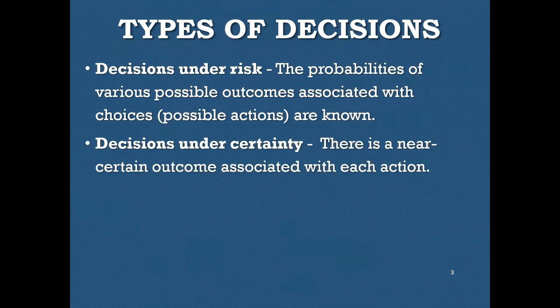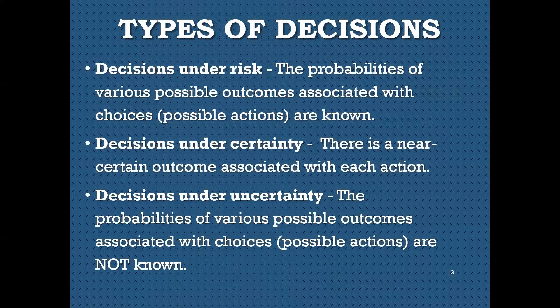Then there are decisions under certainty, where there's a near-certain outcome associated with each action you're taking. Those are not very complicated — you just weigh out the utility. And finally, there are decisions under uncertainty, where the probabilities of the various possible outcomes are not known. We'll talk through in part two how to deal with those kinds of decisions.